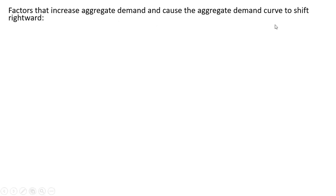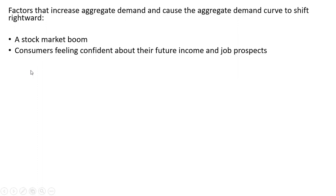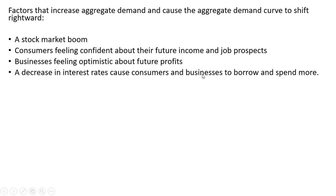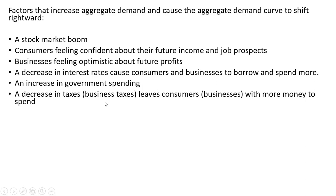Factors that increase aggregate demand and cause the aggregate demand curve to shift rightward include: a stock market boom or housing market boom; consumers feeling confident about their future income and job prospects, such as pay raises or end-of-year bonuses; businesses feeling optimistic about future profits; a decrease in interest rates causing consumers and businesses to borrow and spend more; an increase in government spending on military, roads, etc.; and a decrease in taxes or investment tax credits leaving consumers and businesses with more money to spend.